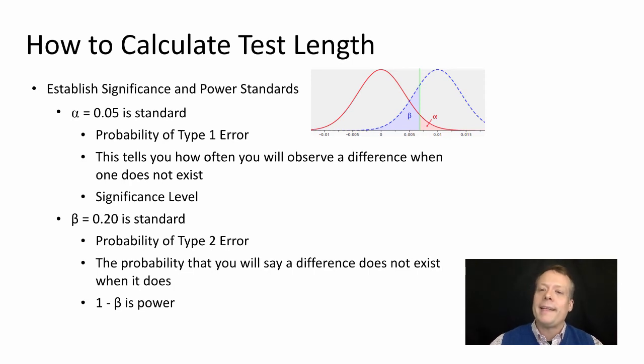One minus beta is referred to as power, so you might sometimes see that there's a 0.8 power for this particular test as opposed to a 0.2 probability of a type 2 error.